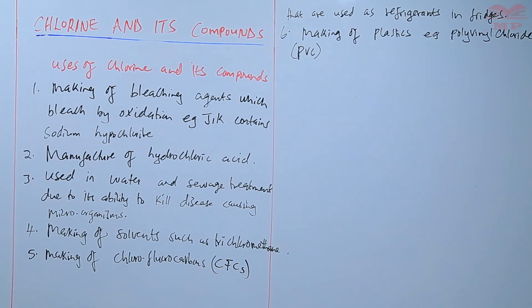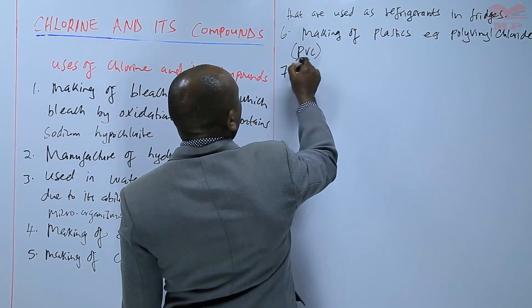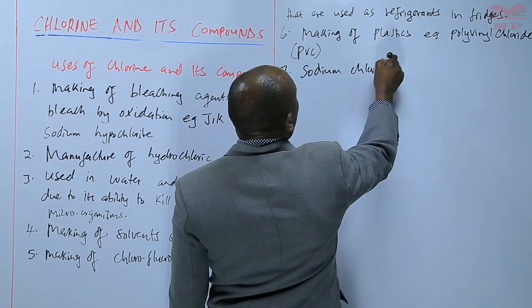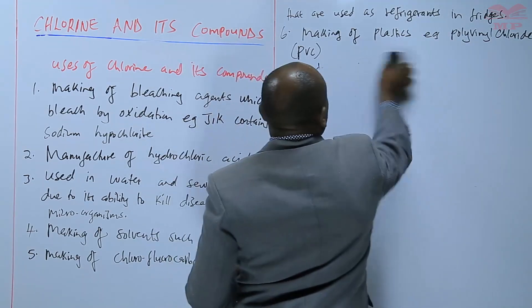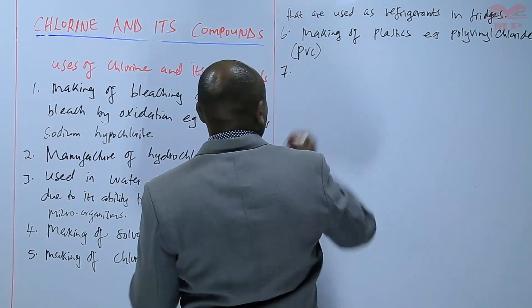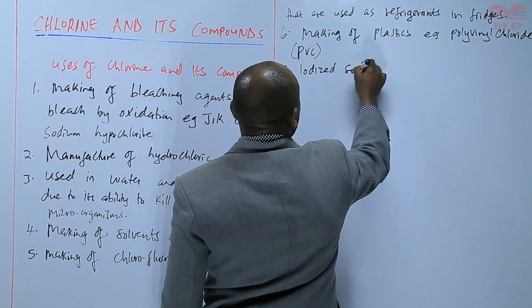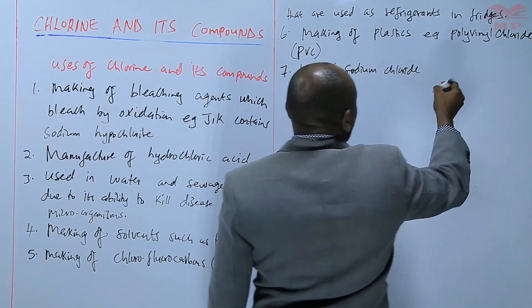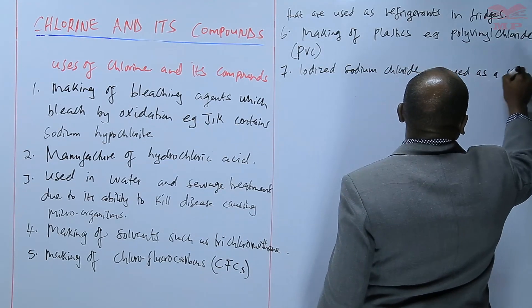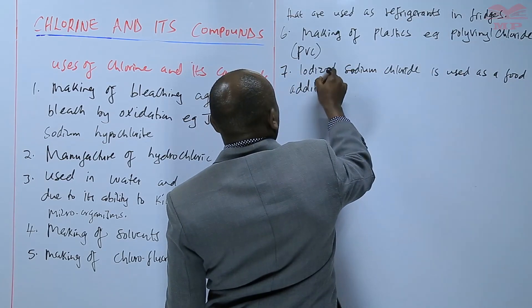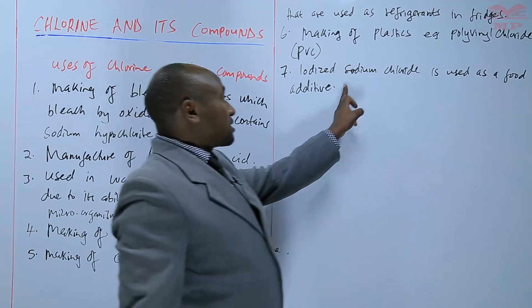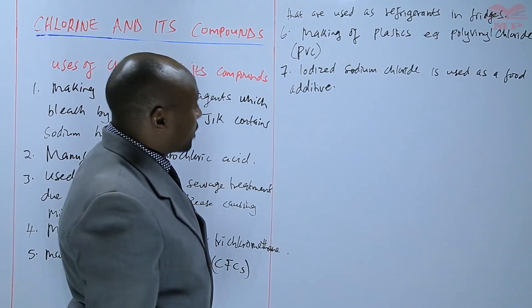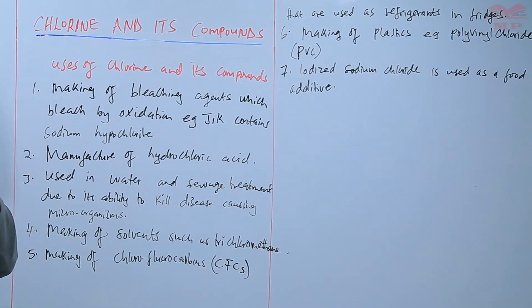We can also say that iodized sodium chloride, which is a compound of chlorine, is used as a food additive. This is the common salt that we eat. It contains chlorine because it's basically iodized sodium chloride. So those are some of the uses of chlorine and its compounds. We'll have an assignment on the same.